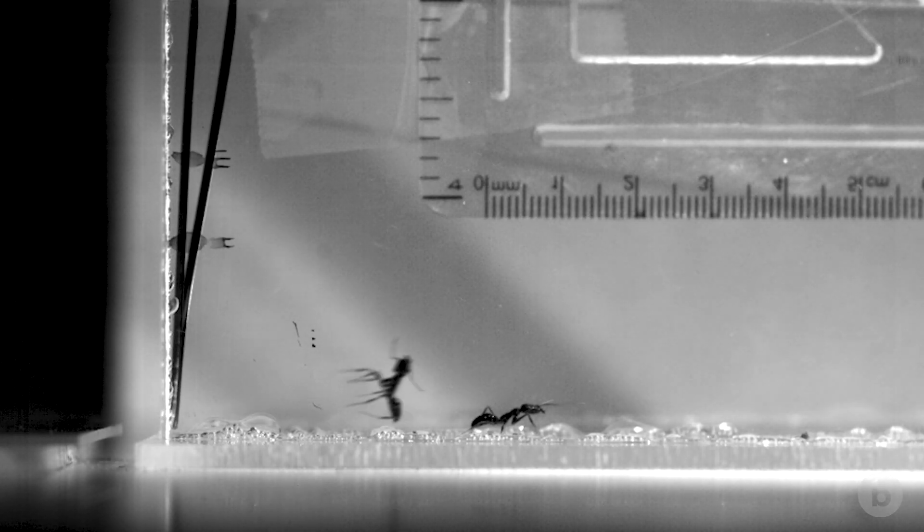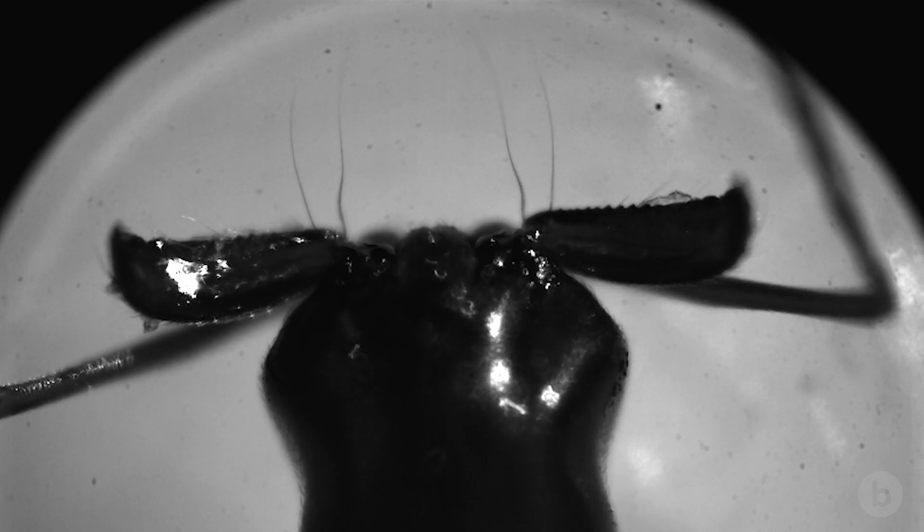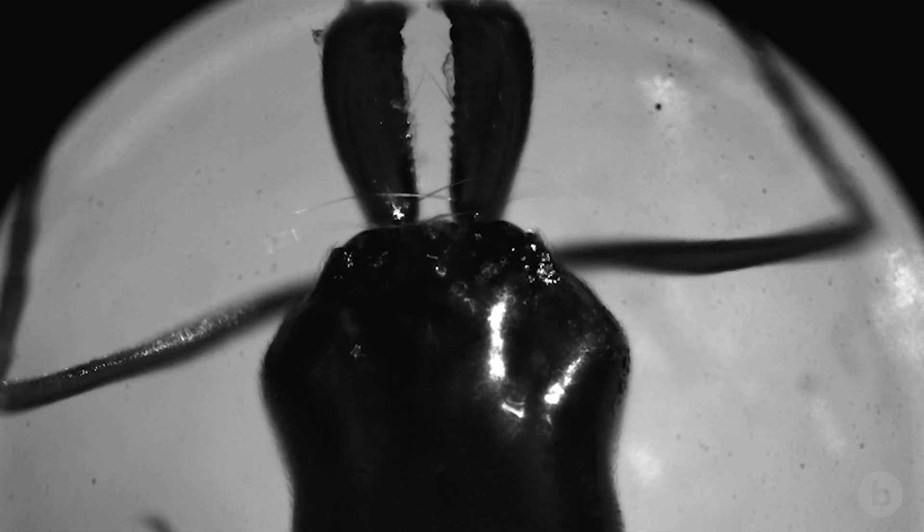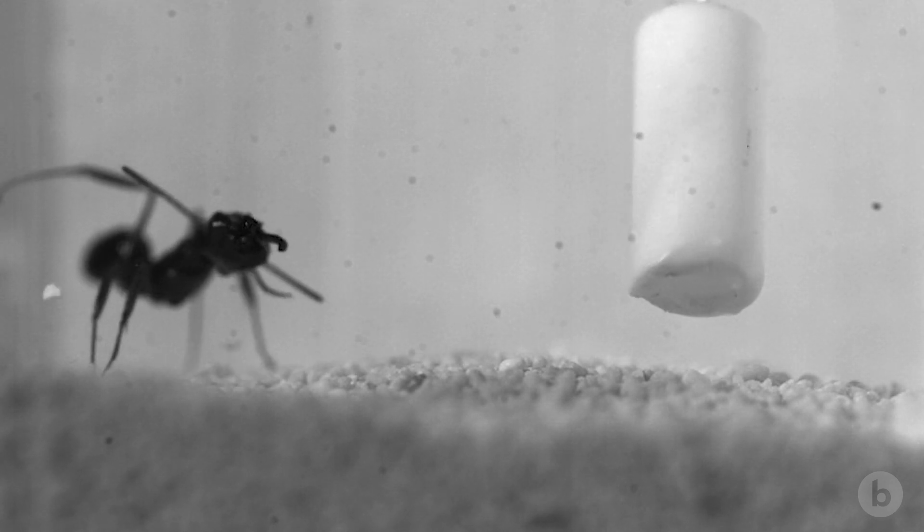I can't think of anything else that jumps with their jaws. The ants have to store up energy in their head or some other elastic structure and then release this energy when they release the latch and the jaws slam closed.